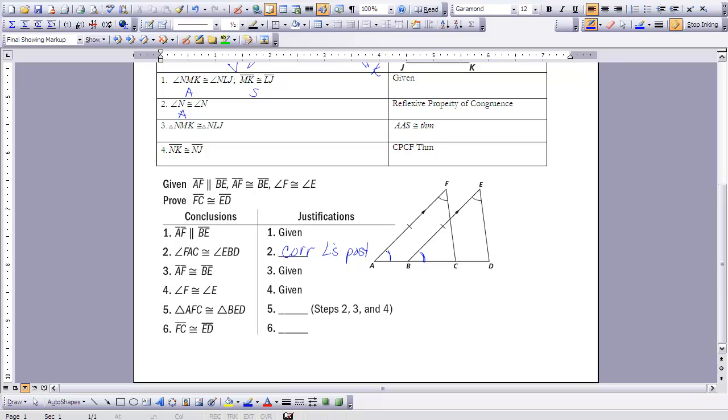And then I know that AF is congruent to BE. That's given. Angle F is congruent to angle E. That is also given. So if you look at this, it appears that I have some angles, two sets of angles and a side. And that side happens to be included in the two angles.